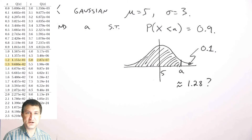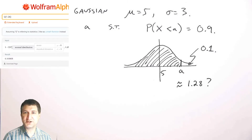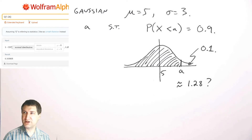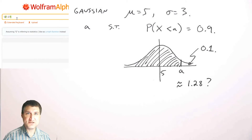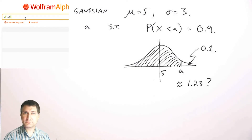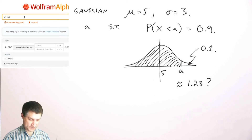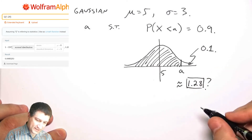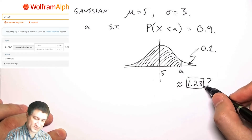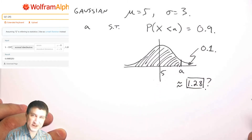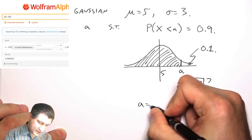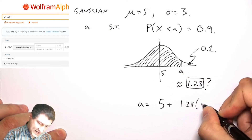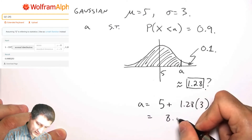Using Wolfram Alpha to be more precise: Q(1.26) is about 0.103, Q(1.27) is a bit closer, and Q(1.28) is essentially on the button, while Q(1.29) is too far. So 1.28 is the z-value. Converting back from the standard Gaussian, that means 'a' is 1.28 standard deviations above the mean: a equals five plus 1.28 times three, which gives 8.84.